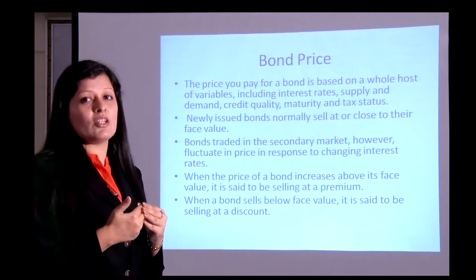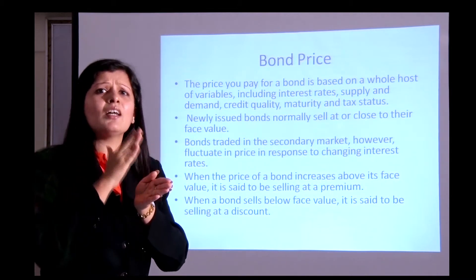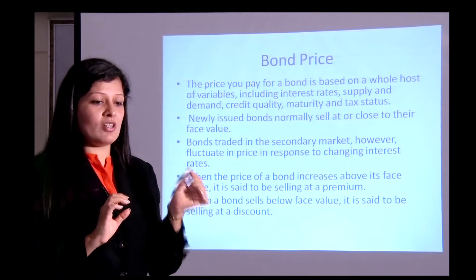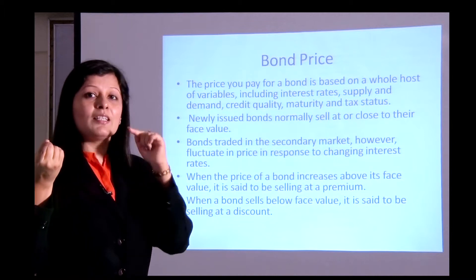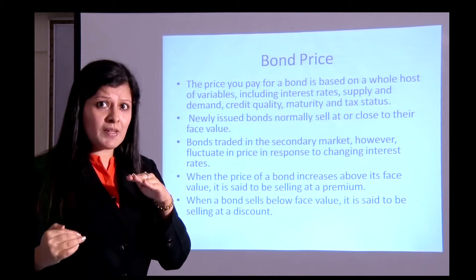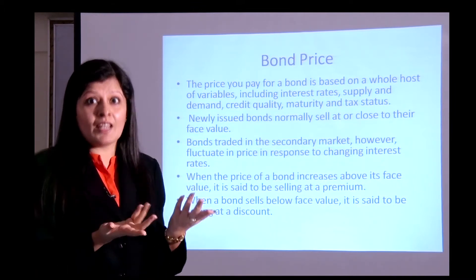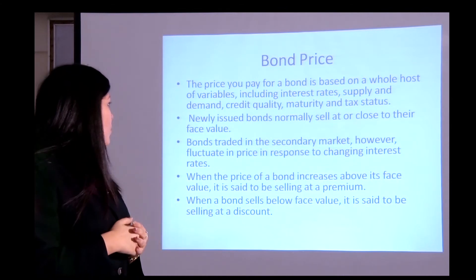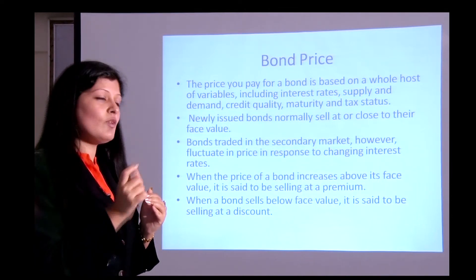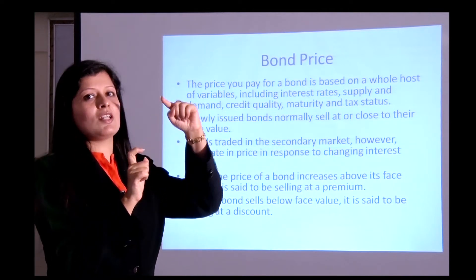Bonds traded in the secondary market fluctuate in price in response to changing interest rates. For example, I issued a bond at 10% for 15 years. After two years, if interest rates rise to 12%, demand for my bond falls and so does its price. If the rate falls to 8%, demand rises because no other bond offers 10%, and the price rises. When the price rises above face value, the bond sells at a premium; when it falls below face value, it sells at a discount — for example, 80 is a discount, 120 is a premium on a face value of 100.